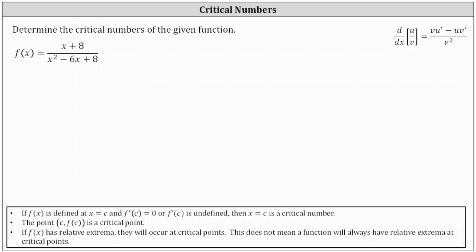To determine the domain of the rational function, let's factor the denominator. If the denominator does factor, it will factor into two binomial factors. The factors of x squared are x and x. The factors of positive eight that add to negative six are negative two and negative four, giving us a factor of x minus two and a factor of x minus four.